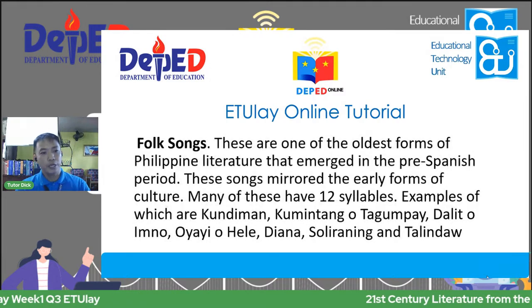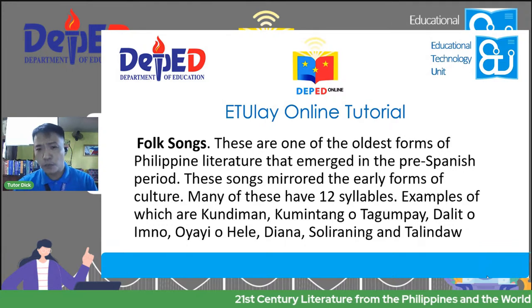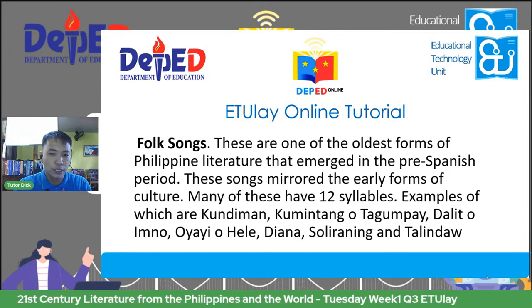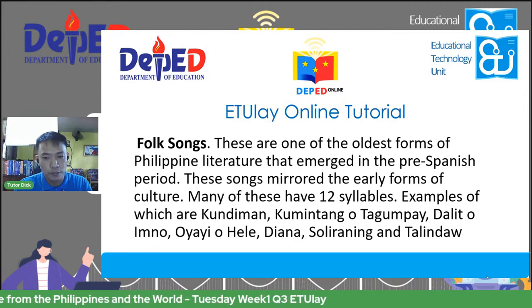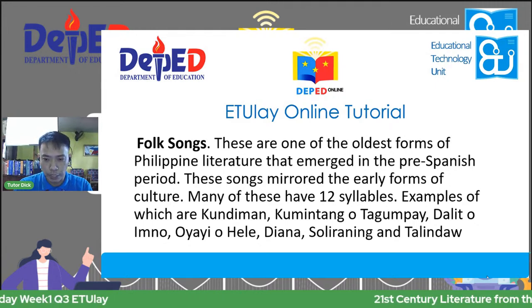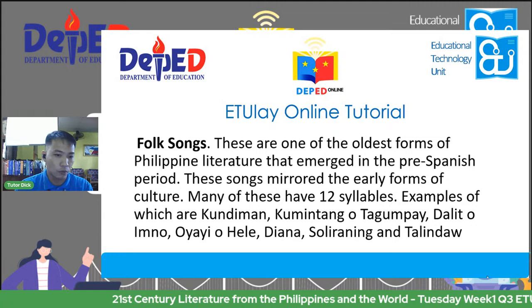We also have folk songs — one of the oldest forms of Philippine literature that emerged in the pre-Spanish period. These songs mirrored the early forms of culture. Many of these have 12 syllables, examples of which are kundiman, kumintang or tagumpay, dalit or himno, oyay or heli (the lullaby), diana or solerging, and talindao.